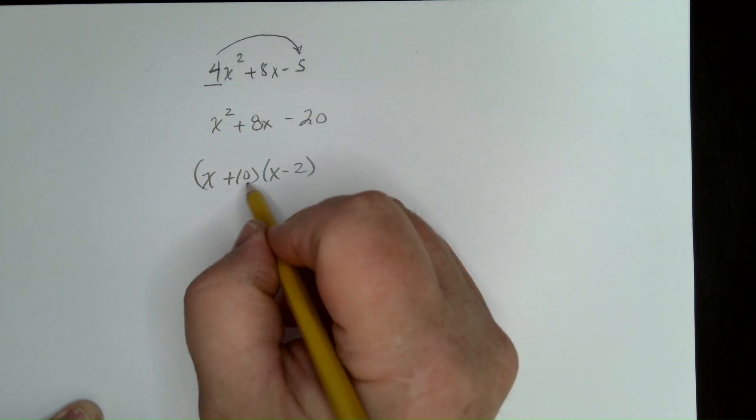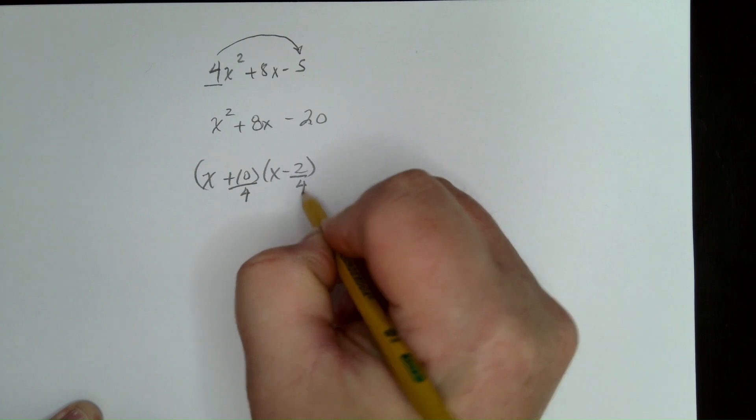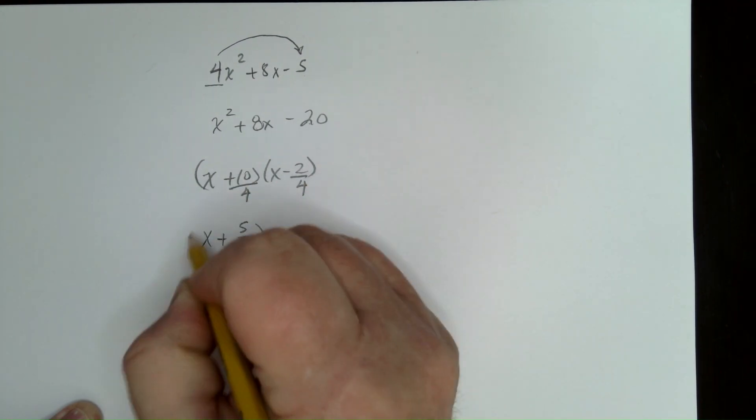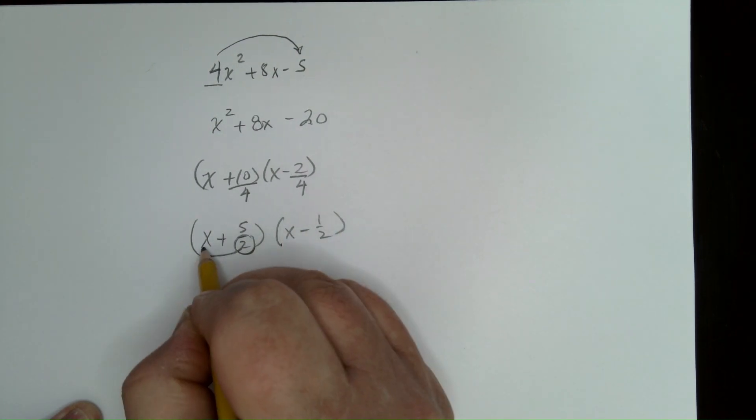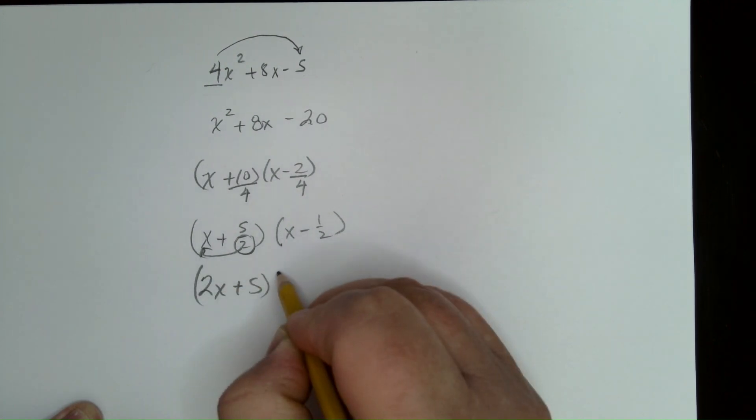So, we multiplied by 4 at the beginning. So, now we have to take that 4 back out. So, we're going to divide by 4. Right? Reduce. Reduce. Okay. Take that denominator. Move it to the front. Make it the coefficient. Pretty cool trick, right?